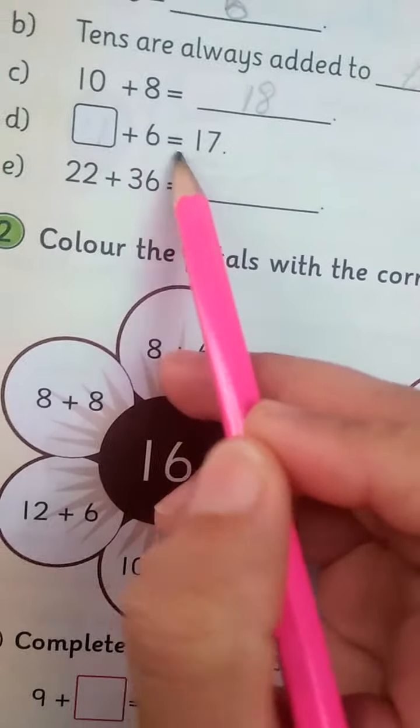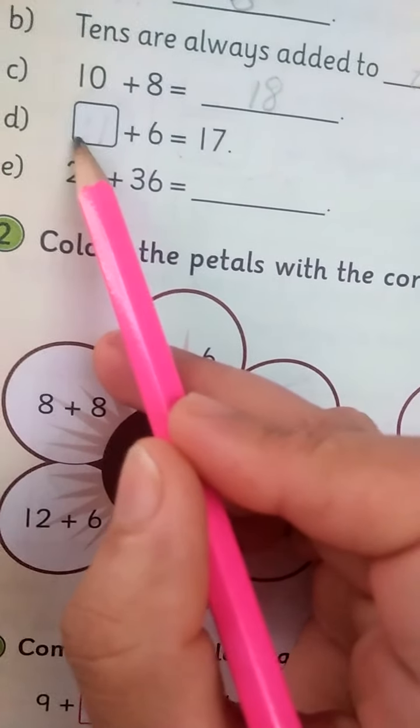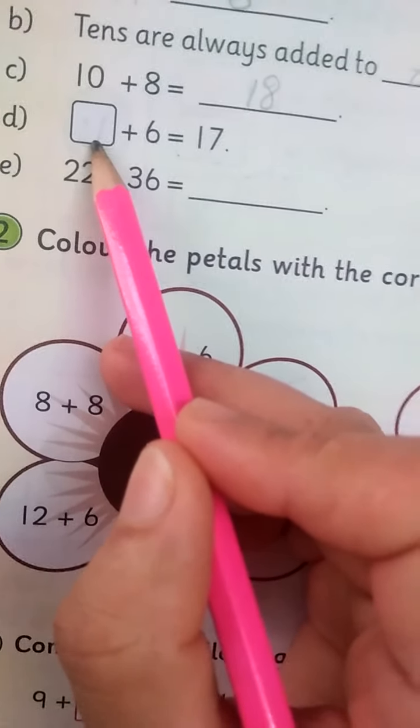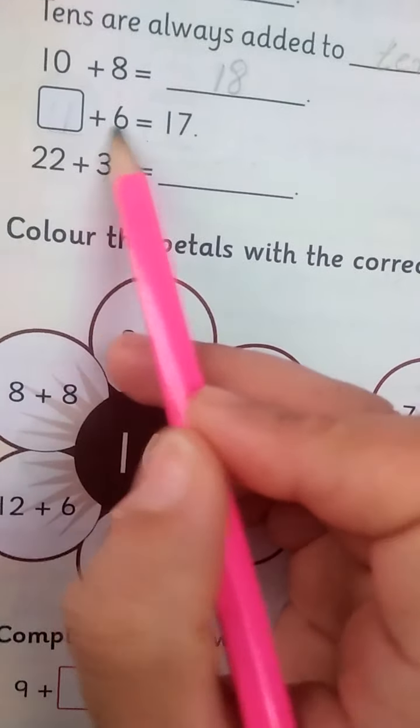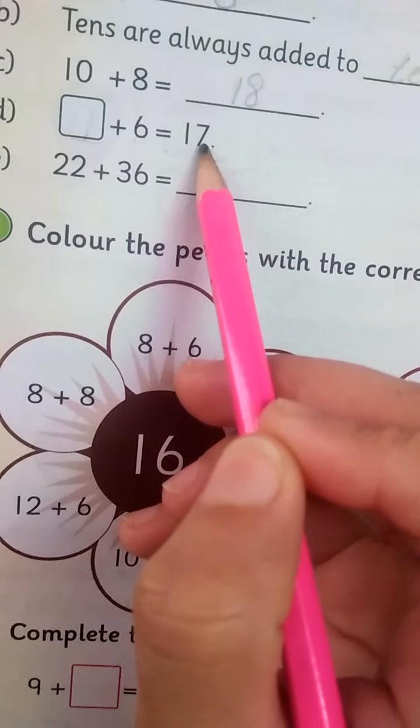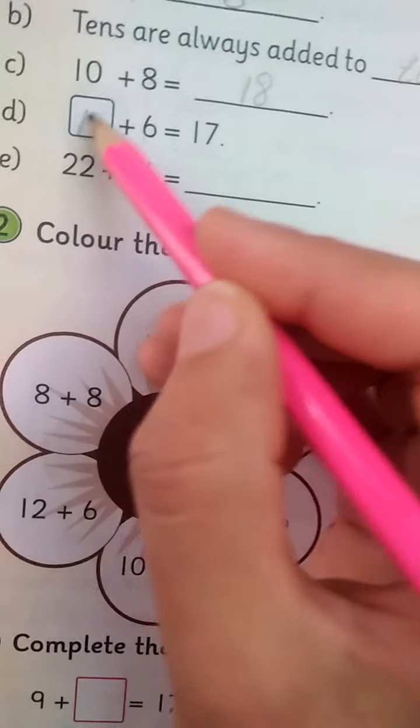Dash plus 6 is equal to 17. Now here is no digit here. You have to write this digit. The digit is 11.